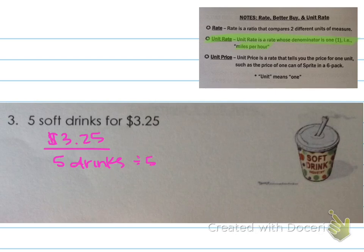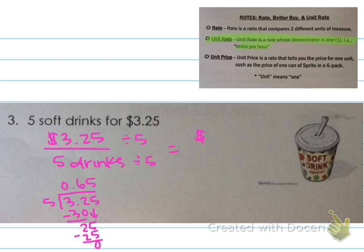To get that, we can divide both top and bottom by five. And so when we do that, we get $0.65 on the top. $3.25 divided by five is $0.65. And then five drinks divided by five is one drink. So it's 65 cents for one drink. That is the unit rate.